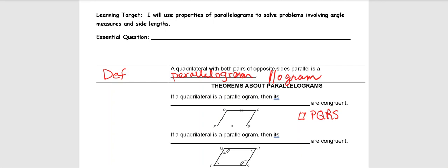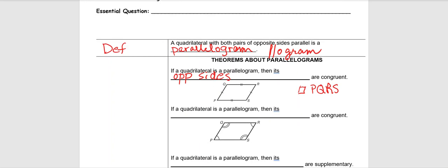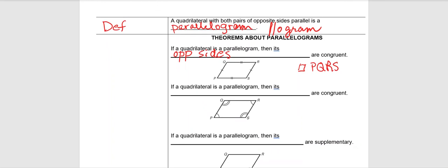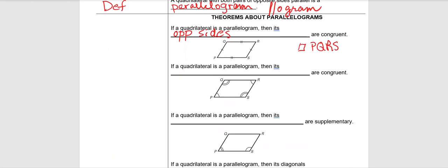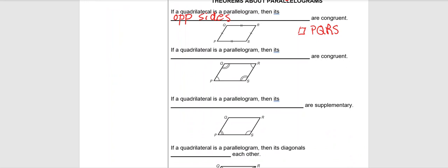In addition to the definition, we got several theorems here. If a quadrilateral is a parallelogram, then its opposite sides are congruent. You can see that marked here in the diagram. PQ is congruent to SR and PS is congruent to QR. Theorem number two: if a quadrilateral is a parallelogram, then its opposite angles are congruent.